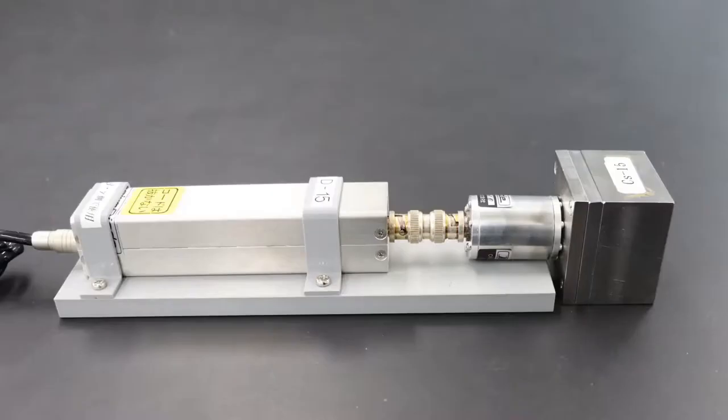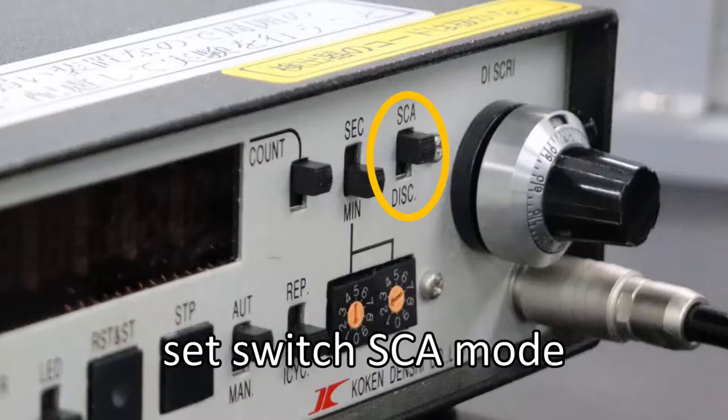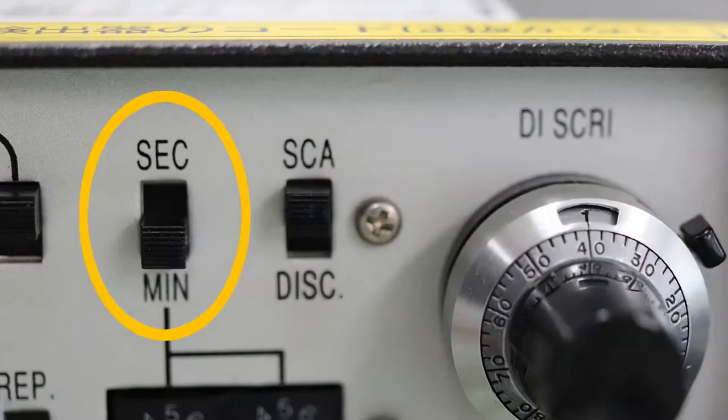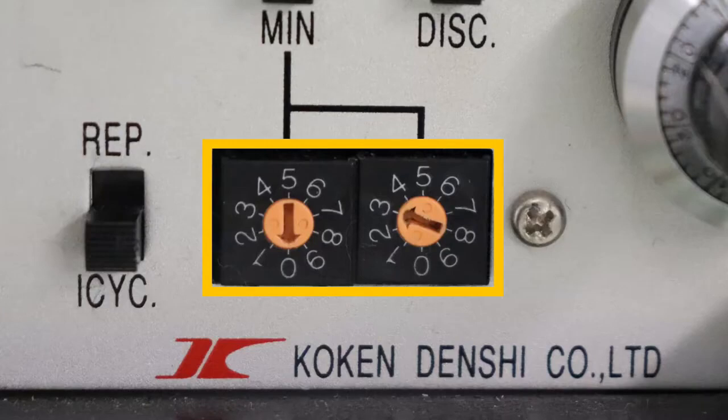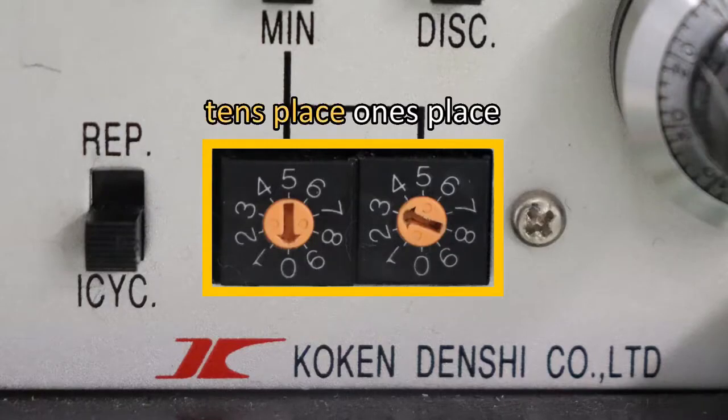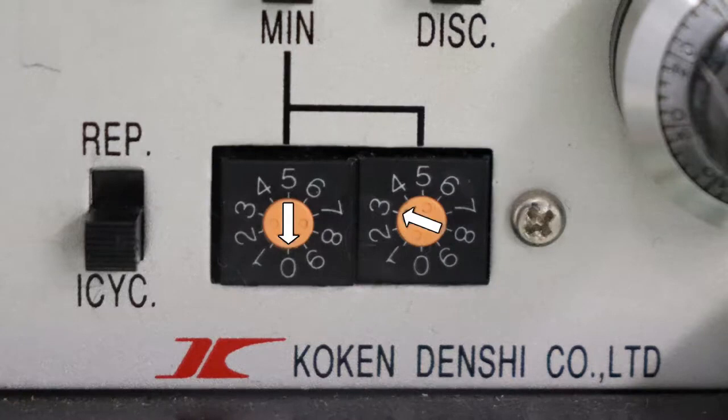Place the source snugly in front of the detector. Switch from DISC mode to SCA mode. This is the switch to change the unit of the measurement time between seconds and minutes, where SEC is seconds and MIN is minutes. Set it to minutes. These two dials are used to set the measurement time. The left side represents the tens place, and the right side represents the ones place. The dials have arrows on them. Read the number that the arrow is pointing at.